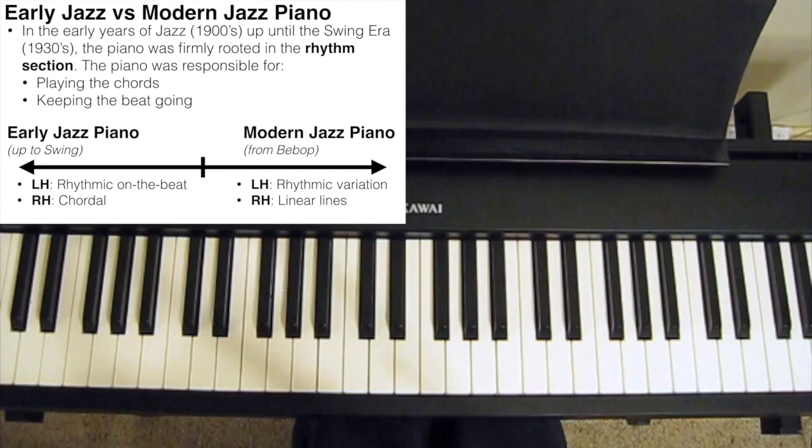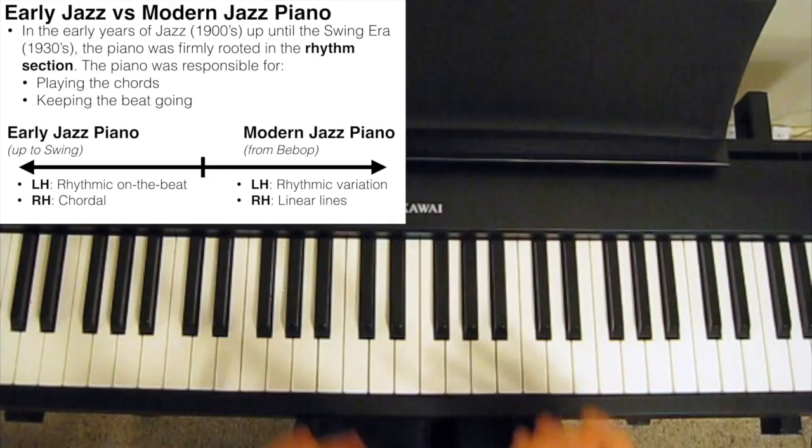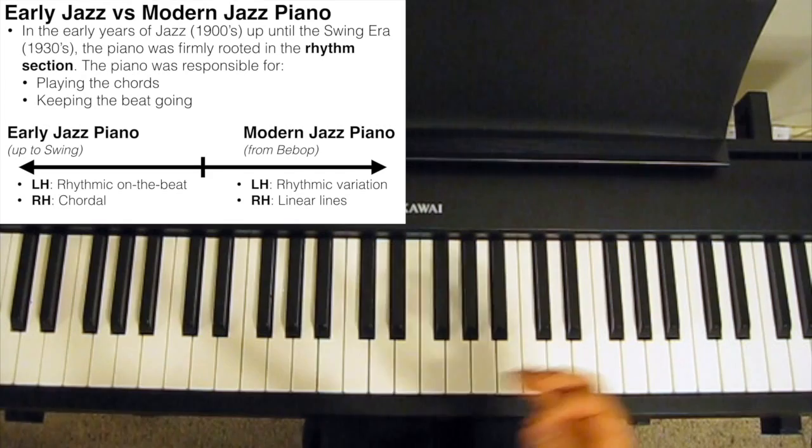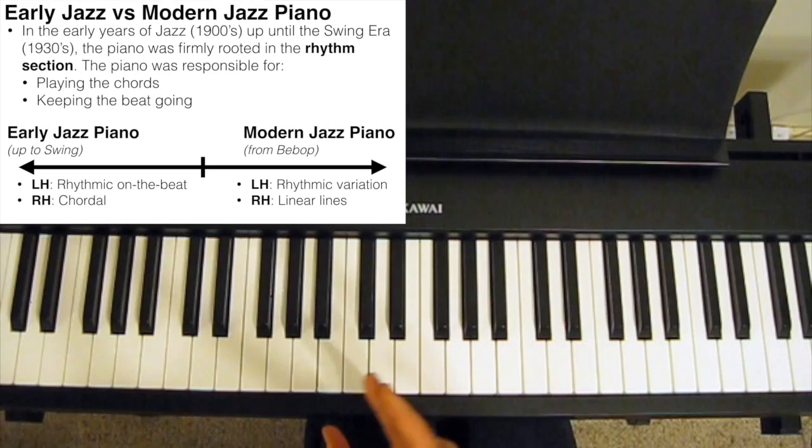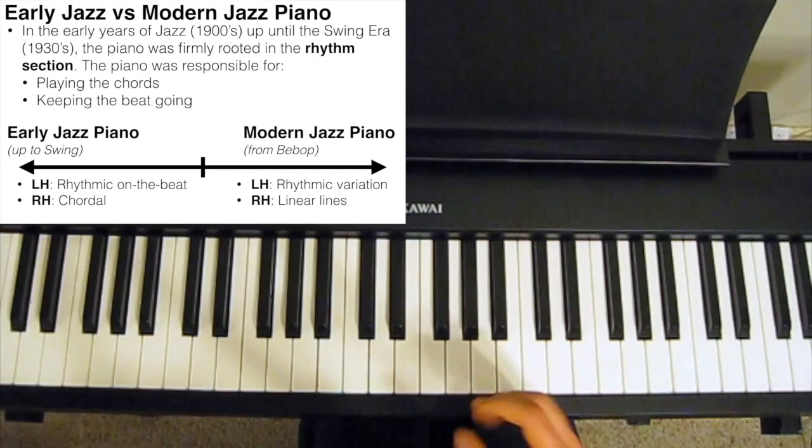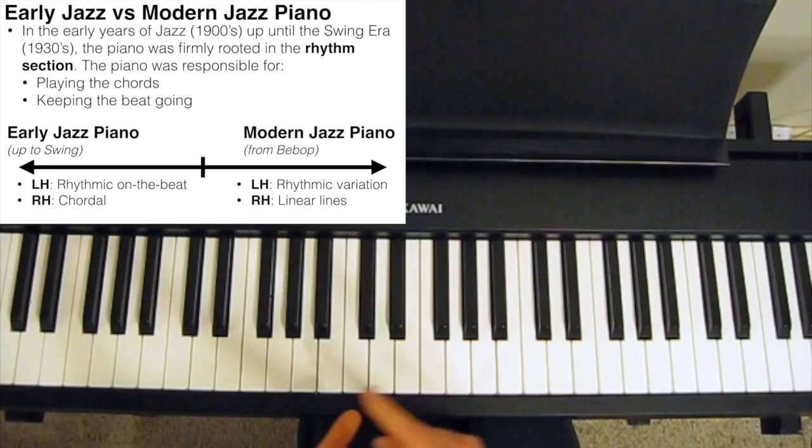So by and large, the left hand of an early jazz pianist just kept the rhythm going by playing on the beat, and usually in fact playing on every single beat. So in 4-4 time, the early jazz pianist would just play four quarter notes or chords all on the beat. Now, during the swing era, jazz was generally played by big bands which had a full rhythm section consisting of drums, bass, guitar, and piano.